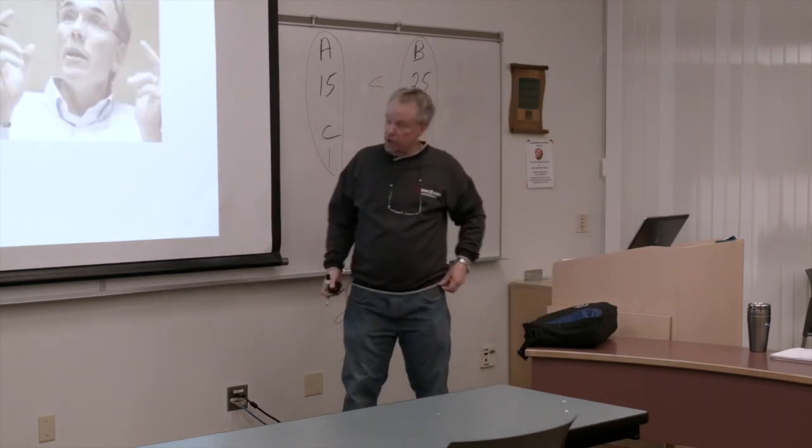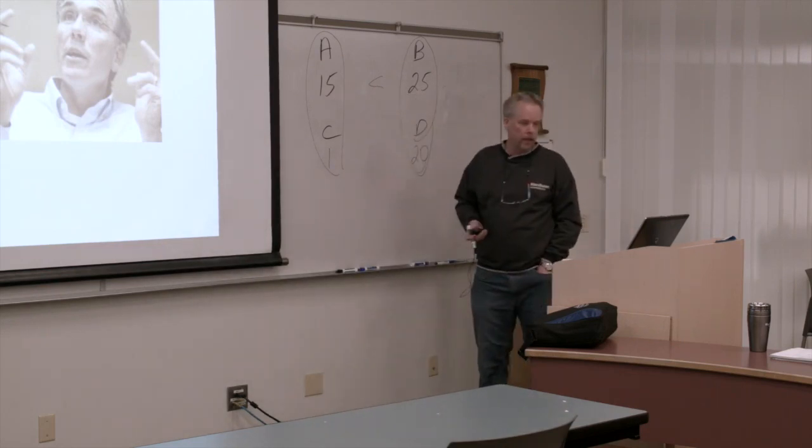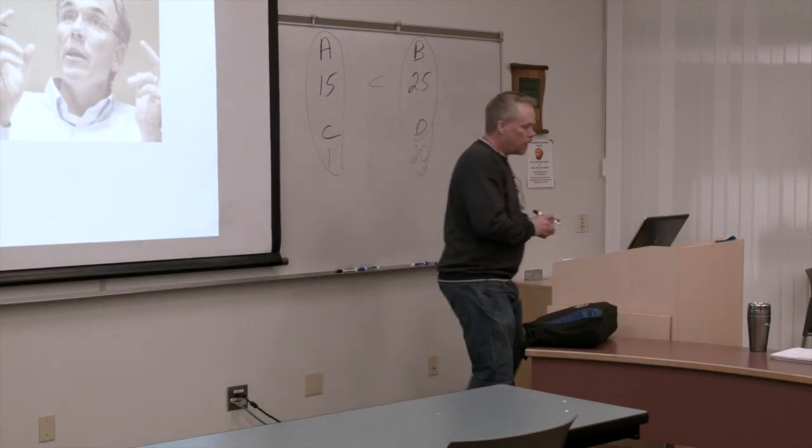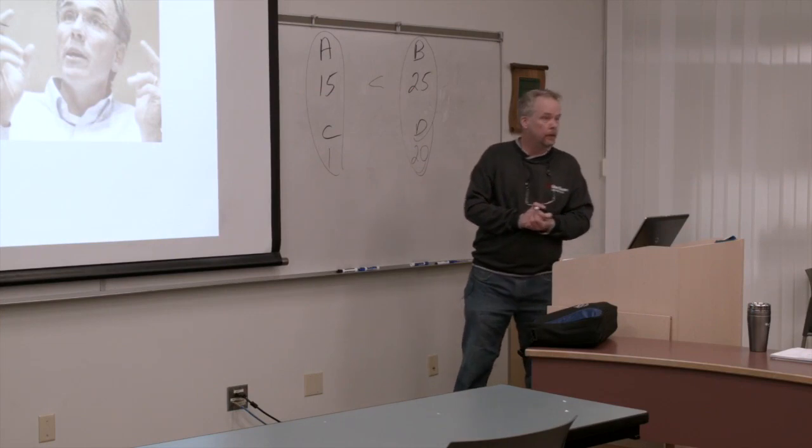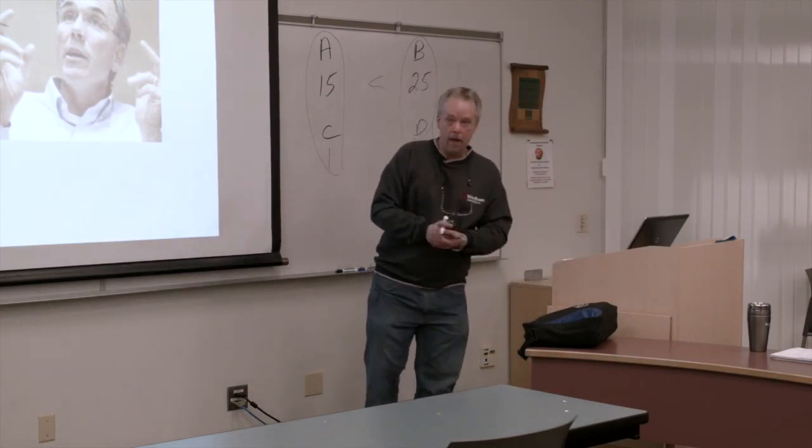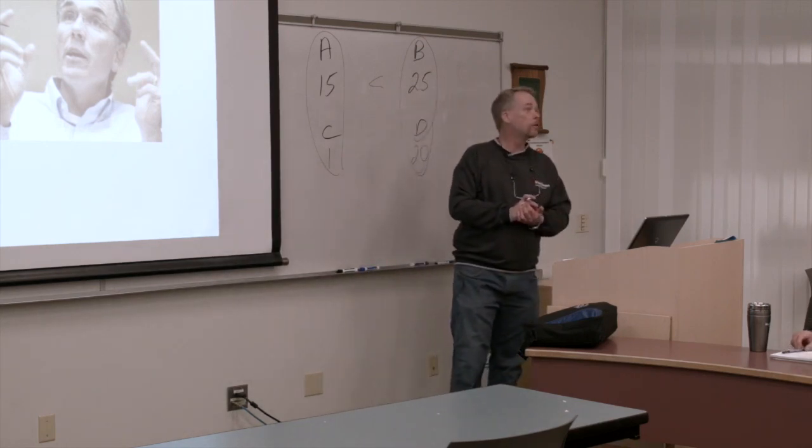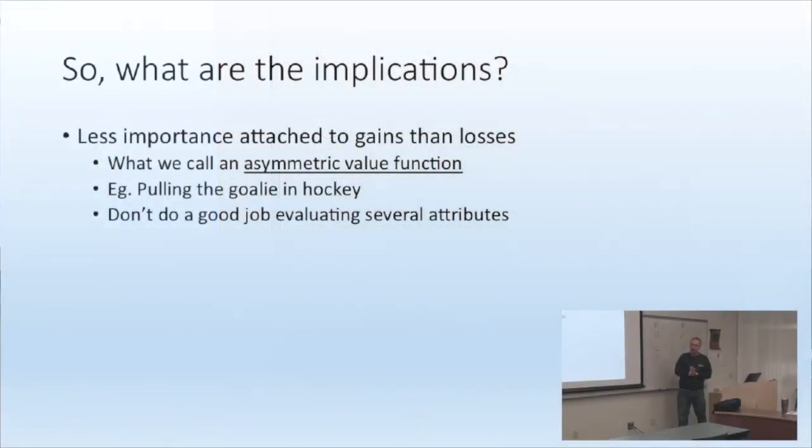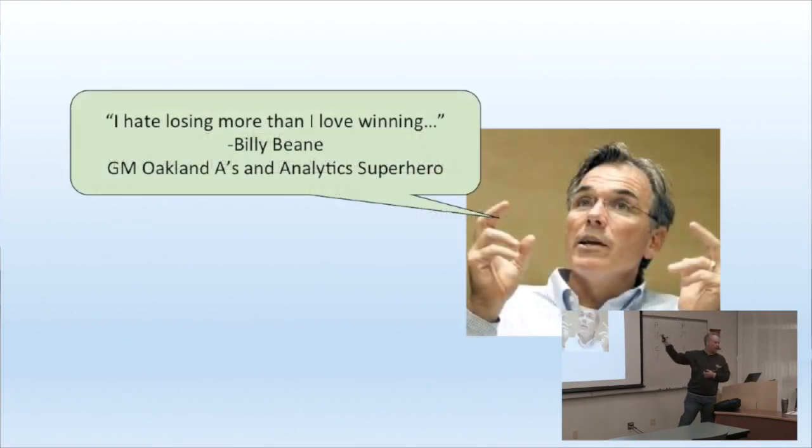So kind of just again, a little bit more on how our decision making is kind of a little bit wonky. This is GM Billy Bean of the Oakland A's. They did a whole movie about him, Moneyball. If you saw the movie, you remember Brad Pitt. That's not Brad Pitt, it's Billy Bean. That's what he actually looks like. He says, I hate losing more than I love winning. Now, even though he's an analytic superhero, there's a problem with that. And maybe that's why he appreciates the wonder of analytics, is that he knows that there are some things that clunk around in our head a little bit funky.